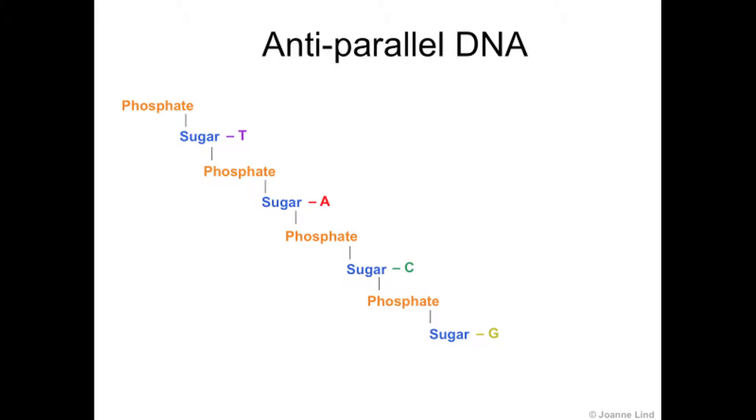Meaning that when DNA pairs to the opposing DNA strand, the two strands run in opposite directions. So if you have a look at this strand, we are going from phosphate sugar attaching a base, phosphate sugar attaching a base, and so on, down the remainder of the strand.